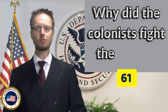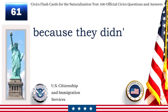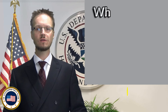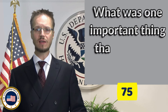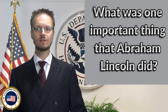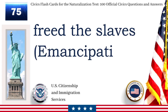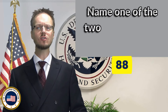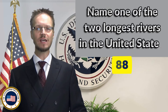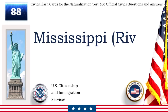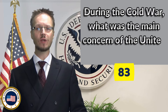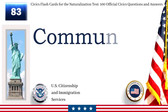Why did the colonists fight the British? Because they didn't have self-government. What was one important thing that Abraham Lincoln did? Freed the slaves. Emancipation Proclamation. Name one of the two longest rivers in the United States. Mississippi River. During the Cold War, what was the main concern of the United States? Communism.